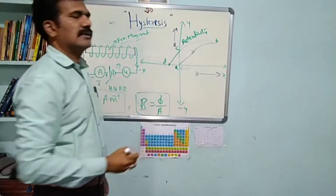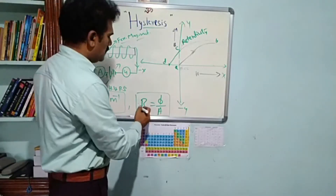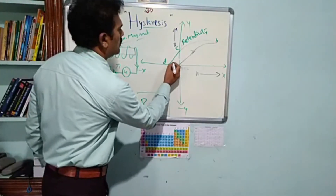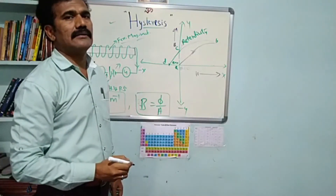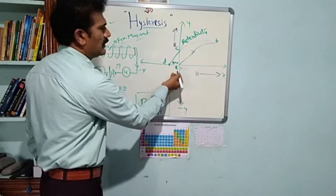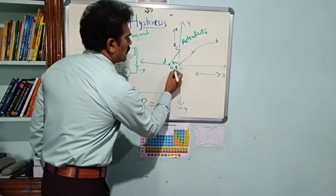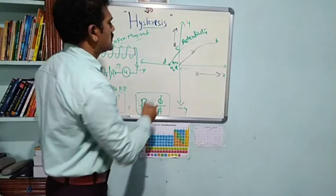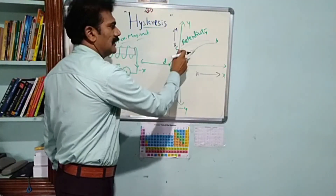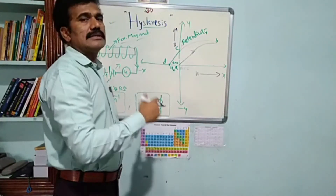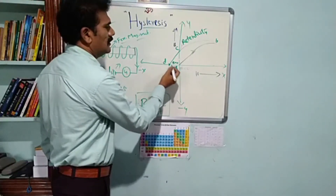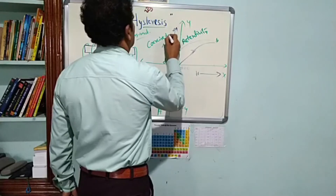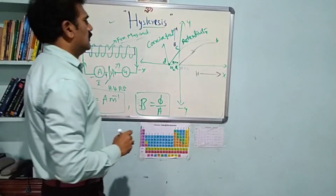At point D, the magnetic flux density B is zero, but the magnetic field intensity H is not zero — there is some field applied in the opposite direction. This field is called the coercive field, denoted Hc. Coercivity is the phenomenon of reducing the remanent magnetic field or retentivity value to zero, and the reverse field required to do so is called the coercive field Hc.